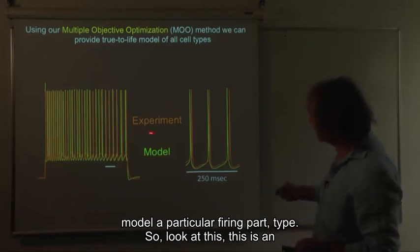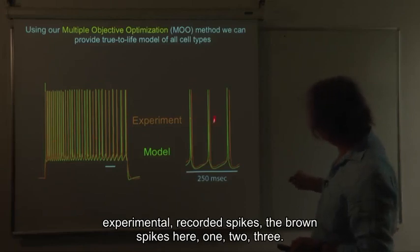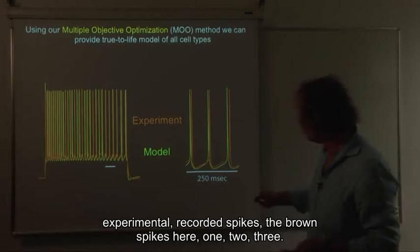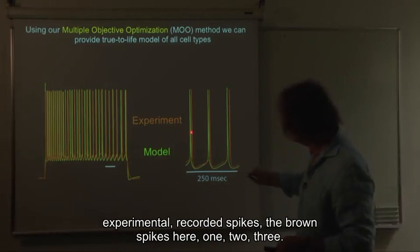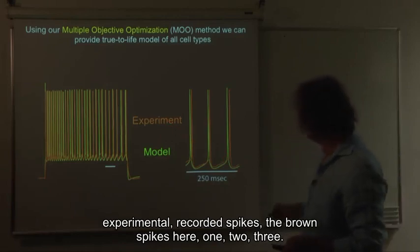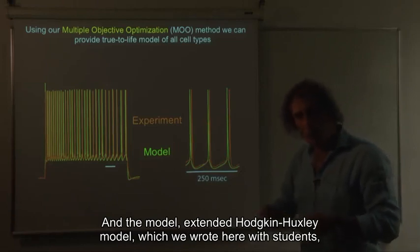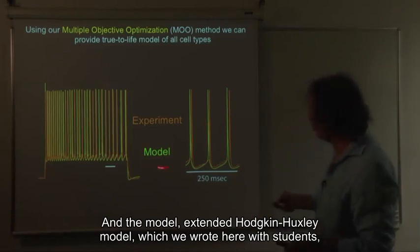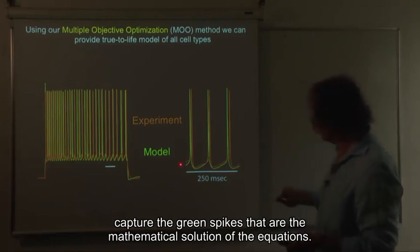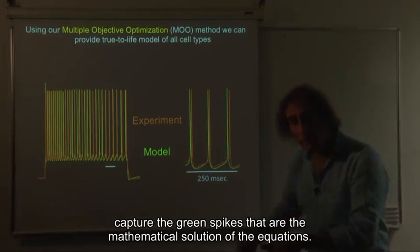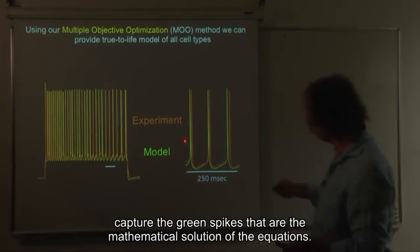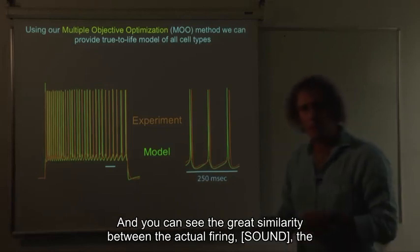So look at this, this is an experimental recorded spike, the brown spike here, one, two, three. And the model, extended Hodgkin-Huxley model, which we wrote here with students, capture the green spikes that are the mathematical solution of the equations.